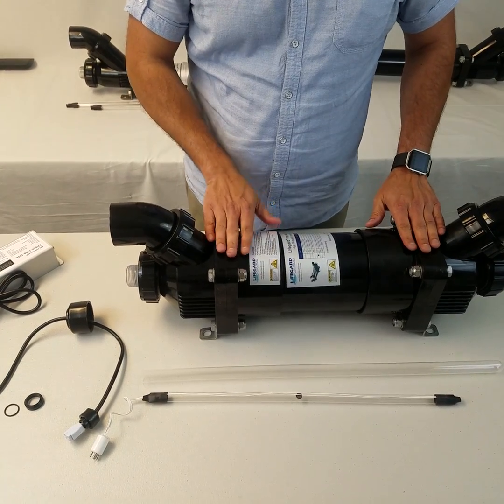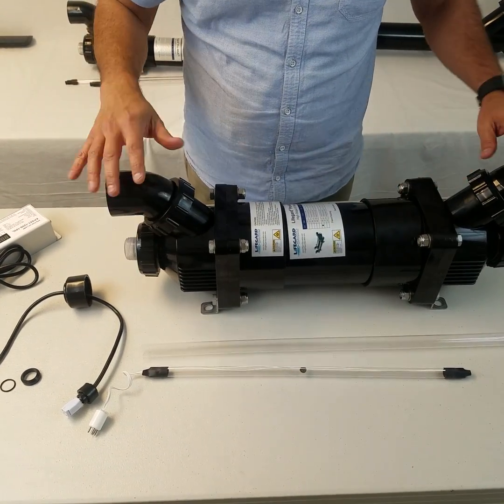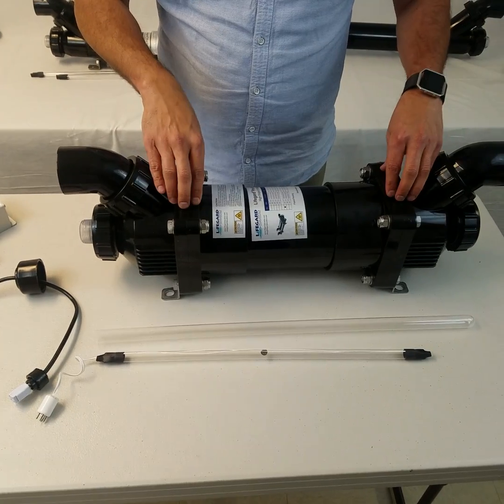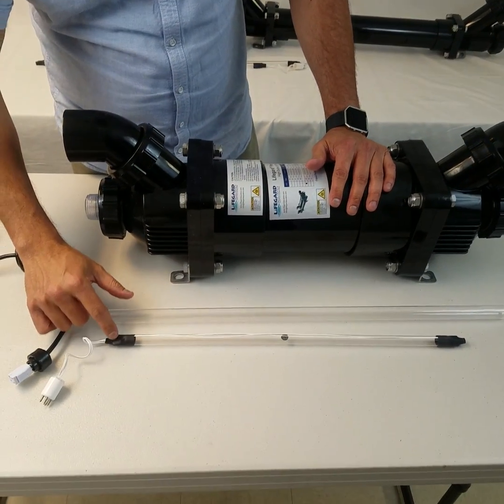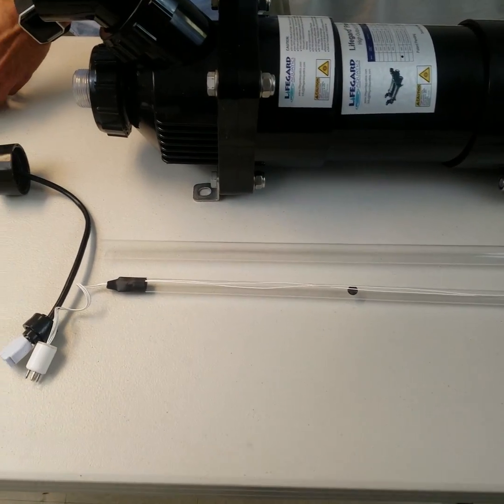Once you have set up the UV, I'm going to show you how to install the bulb, ballast, and sleeve. In the box with the UV housing there will be one bulb, one quartz sleeve, and one ballast.